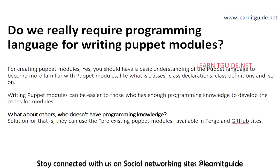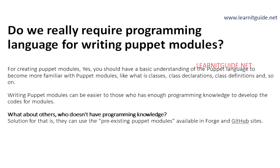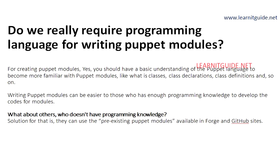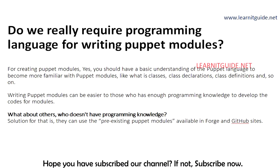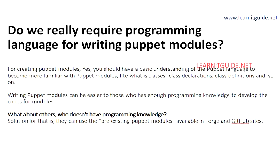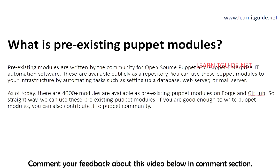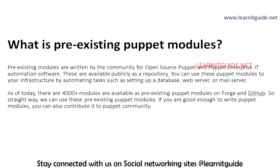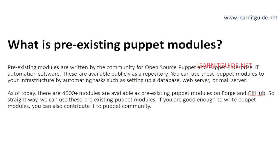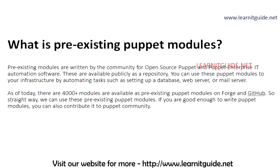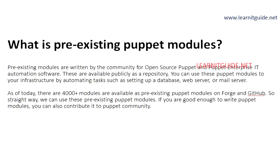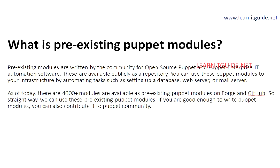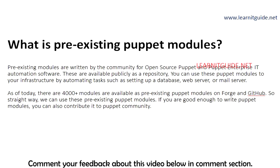But what about those who don't have a programming background? The solution is they can use pre-existing Puppet modules available on Forge and GitHub websites. They don't need to write any code — they can simply use pre-existing Puppet modules. Pre-existing modules are written by the community for open source Puppet and Puppet Enterprise automation software, and they are available publicly as a repository. You can use these Puppet modules in your infrastructure to automate tasks such as setting up a database, web server, mail server, or any other application services.